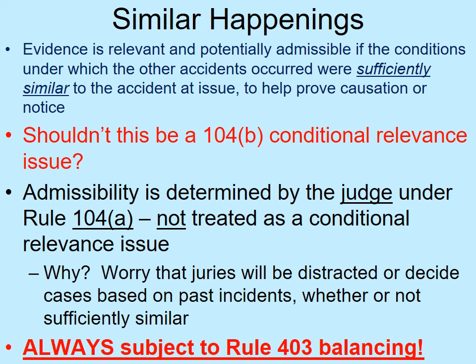This begs the question: shouldn't this be a Rule 104B conditional relevance determination by the judge — shouldn't the evidence be admitted as long as a reasonable jury could find the events similar enough? The answer is no. Even though most conditional relevancy issues are determined under a Rule 104B-type scheme, for policy reasons this admissibility determination for similar happenings evidence has been given to judges. Judges must determine whether the incidents or accidents are similar enough to be relevant by a preponderance of the evidence before admitting evidence about them.